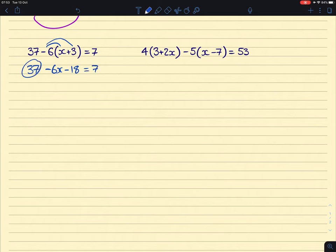Then we can simplify here. We have 37 take away 18. So we can go ahead and do that. We end up with 19 minus 6x, and that equals 7.